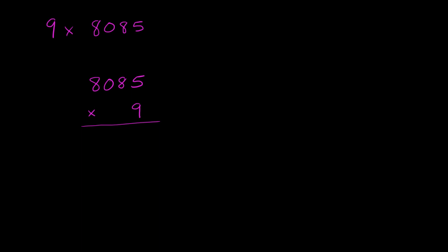First, we can tackle 9 times 5. We know that 9 times 5 is 45. We write the 5 in the ones place, and carry the 4 to the tens place.